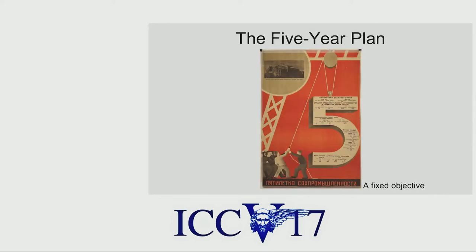I read up on this, and one issue was that we had the planned economy — what's called the five-year plan — so every five years economists would get together and figure out a fixed objective: how much of everything would be produced within the next five years. It was all fixed. And that turns out to be a problem.